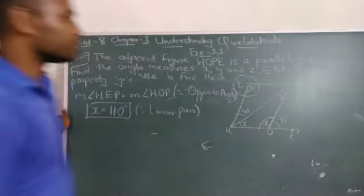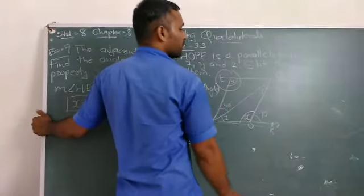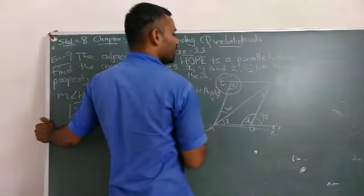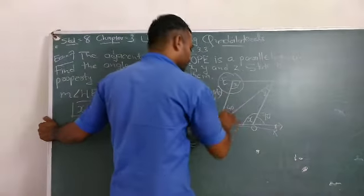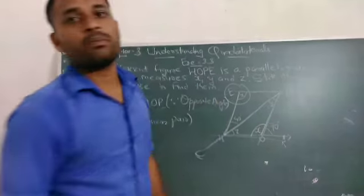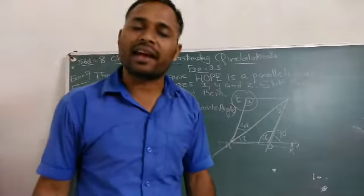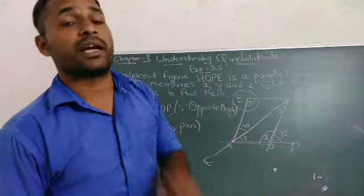Next, these two lines are parallel and this is your transversal, making the shape of Z. This means pair of alternate interior angles. Z shape, so they are same.